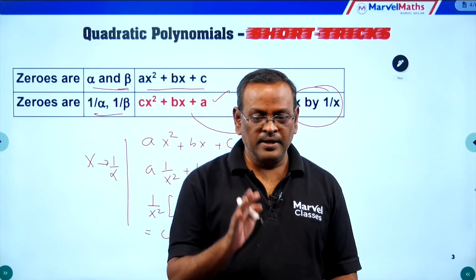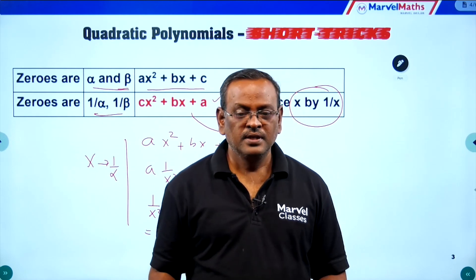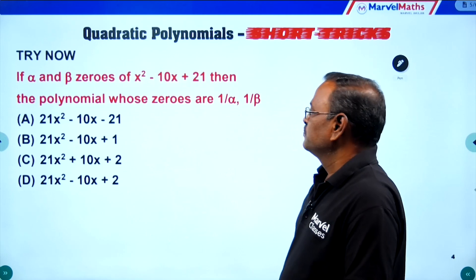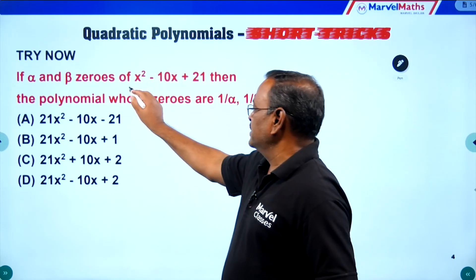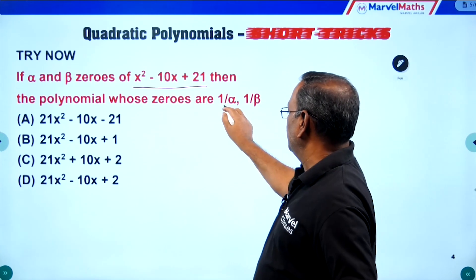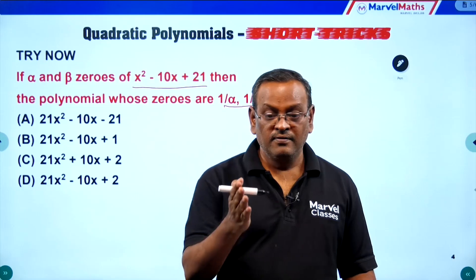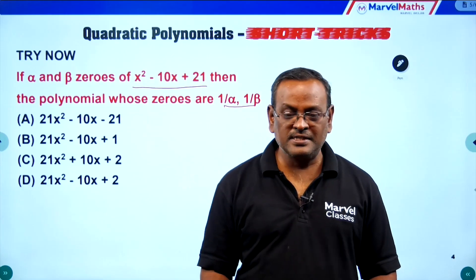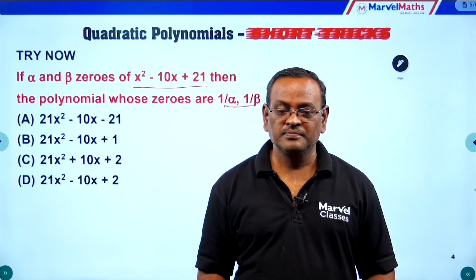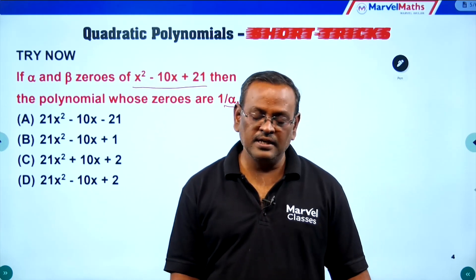One more challenge based on this short trick: if alpha and beta are zeros of x squared minus 10x plus 21, find the polynomial whose zeros are 1 by alpha and 1 by beta. The answer is option B. Well done! You answered first and understood the short trick clearly. See you in the next challenge. Thank you sir.